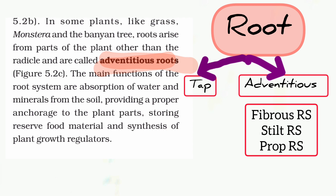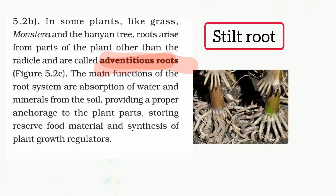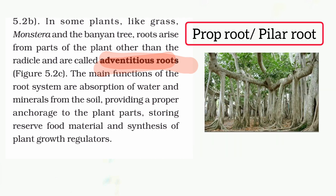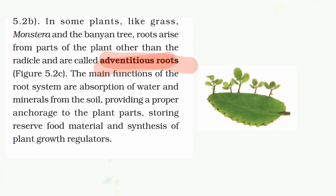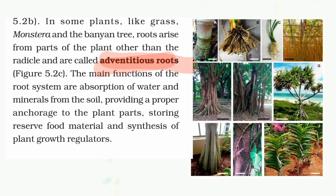The fibrous root system is one type of adventitious root system. The stilt root is also a kind of adventitious root system. Prop roots, such as those of the banyan tree or pillar roots, are adventitious root systems. When a plant cutting is made, the leaf can develop roots — these are also adventitious roots.